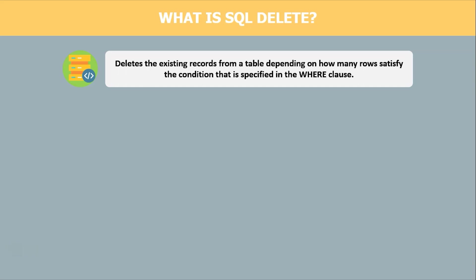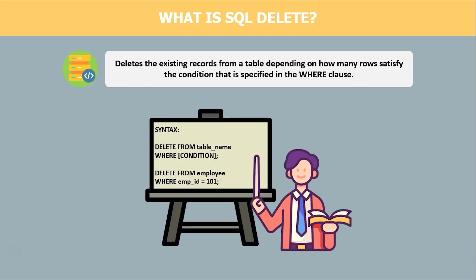Let us now understand the syntax of the SQL Delete Statement. The syntax is: DELETE FROM table_name WHERE condition. The WHERE condition is optional — you can either use it or not. For example, if I want to delete the details of the employee from the employee table whose employee ID is 101, the query would be: DELETE FROM employee WHERE employee_id = 101. Executing this query will delete the details of that employee, and in this way you can delete one or more rows from the existing table.